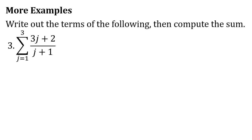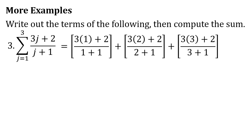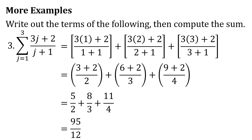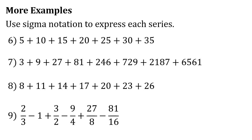For number 3: the sum of (3j + 2) all over (j + 1) as j goes from 1 to 3. We substitute j as 1, 2, and 3, since the first value is 1 and the last value is 3. Continuing the arithmetic, we arrive at 5/2 plus 8/3 plus 11/4, which equals 95/12. So the sum of the series is 95/12.